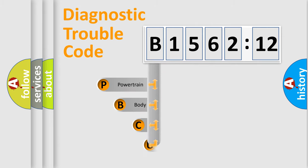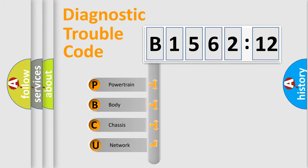Powertrain, Body, Chassis, and Network. This distribution is defined in the first character code.